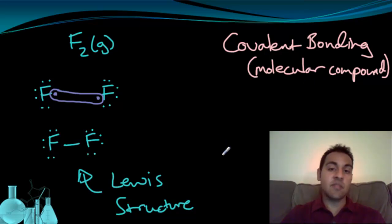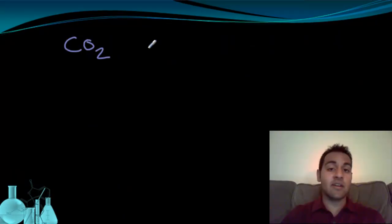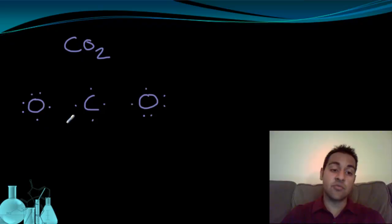Let's look at a slightly more complicated example and see what we can come up with. Carbon dioxide is a covalent compound. Let's see if we can come up with the Lewis structure. We have carbon, oxygen, and oxygen. Carbon has four valence electrons. And each oxygen has six.